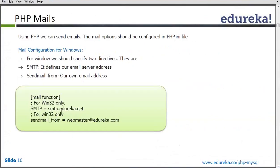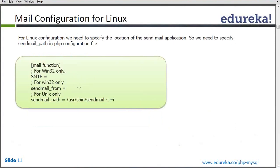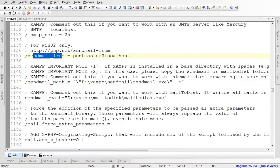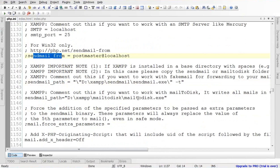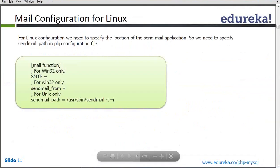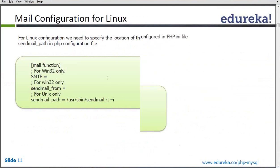These are the settings in PHP.ini regarding emails on the Windows platform. For Unix or Linux, apart from these two values, there is a third setting: sendmail_path. This is the path through which your mail will go. The sendmail_path has a default value, and we can change this path as per our server settings and requirements. This is the email configuration in PHP for both Windows and Linux servers.